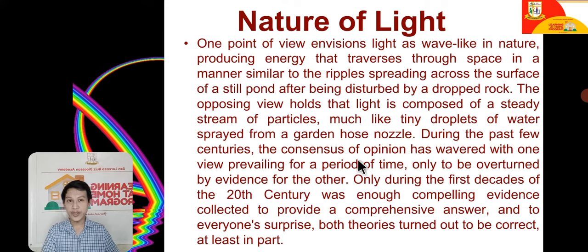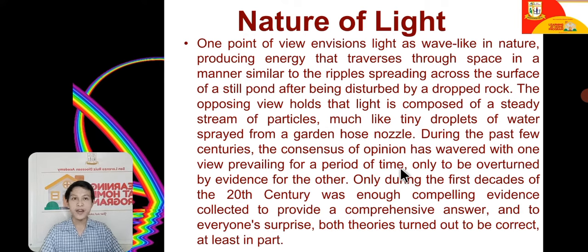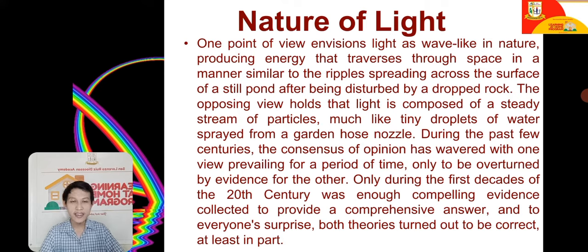During the past few centuries, the consensus of opinion wavered, with one view prevailing for a time only to be overtaken by evidence for the other. Only during the first decade of the 20th century was enough compelling evidence gathered to provide a comprehensive answer — and to everyone's surprise, both theories turned out to be correct, at least in part. So light is both a wave and a particle.